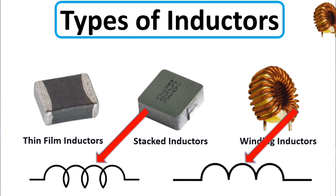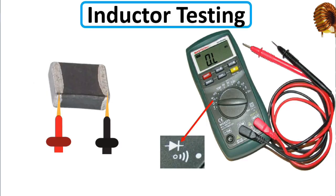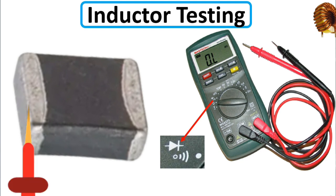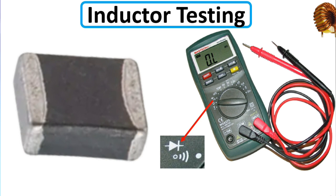These two symbols are for inductors — you can find one symbol or the other. To test an inductor, select the continuity option on the multimeter. You can put the red probe on one terminal and the black probe on the other, or reverse them — it doesn't matter, because the inductor is not polarized like an electrolytic capacitor.